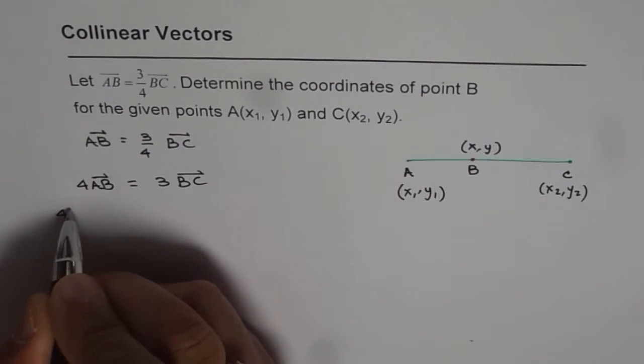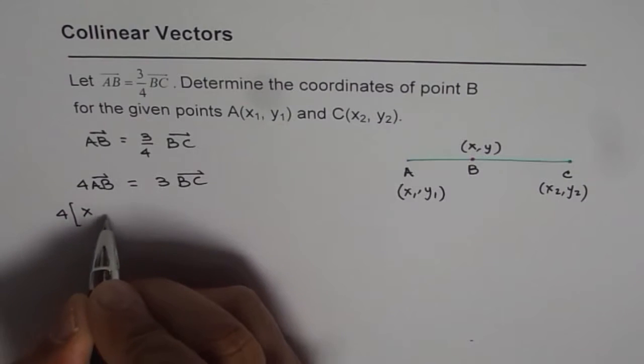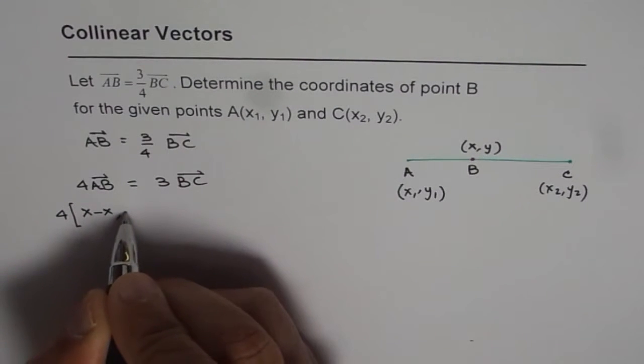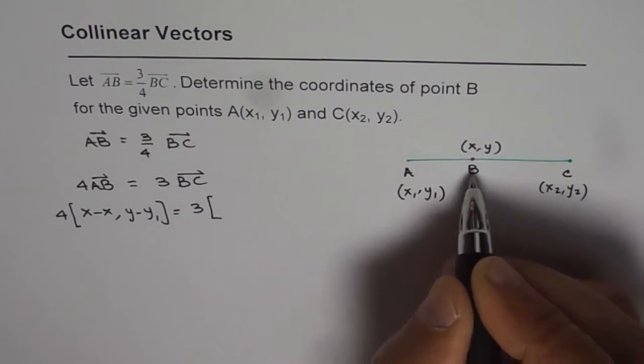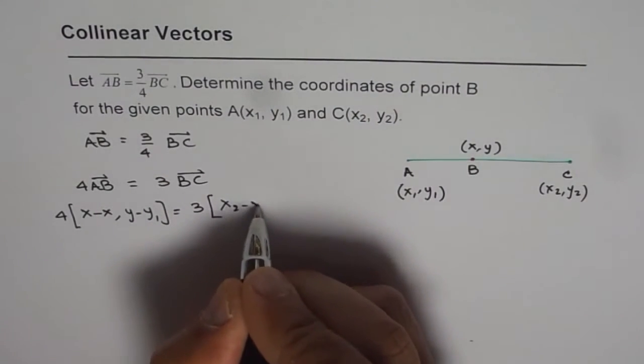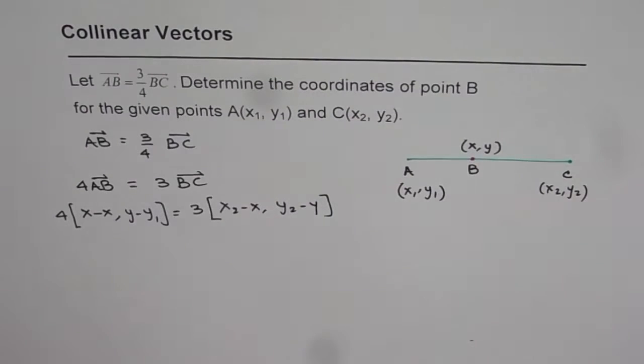We can now write 4 times (x minus x₁, y minus y₁), that is AB, equals 3 times BC which is (x₂ minus x, y₂ minus y). That is how they are related.